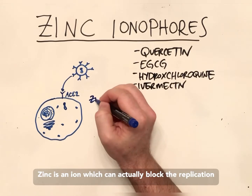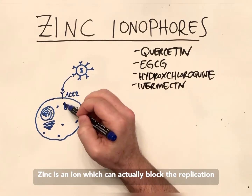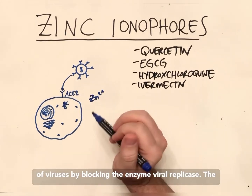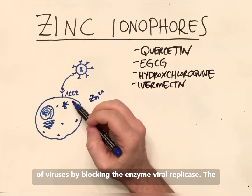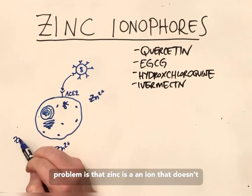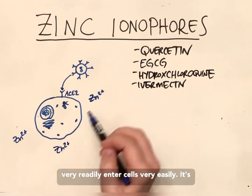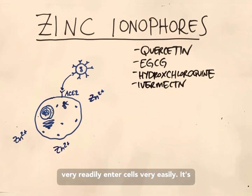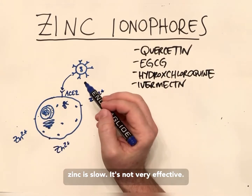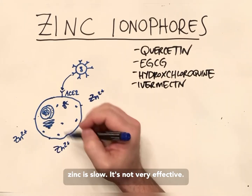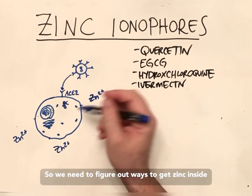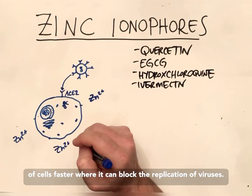Zinc is an ion that can actually block the replication of viruses by blocking viral replicase. The problem is that zinc doesn't readily enter cells easily — the ion transporter that normally allows zinc in is slow and not very effective. So we need to figure out ways to get zinc inside cells faster, where it can block the replication of viruses.